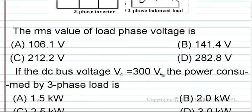First question: The RMS value of load phase voltage is: (A) 106.1 volt, (B) 141.4 volts, (C) 212.2 volts, (D) 282.8 volts.